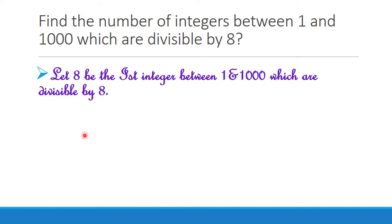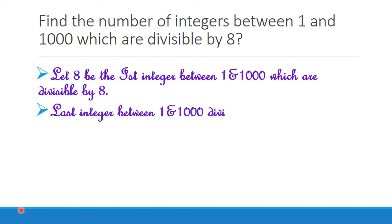So 8 is our first integer between 1 and 1000 which is divisible by 8. Since we have found the first integer, we have to find the last integer too. Let the last integer between 1 and 1000 divisible by 8 be 992. Here, we can also note that 1000 is not divisible by 8.